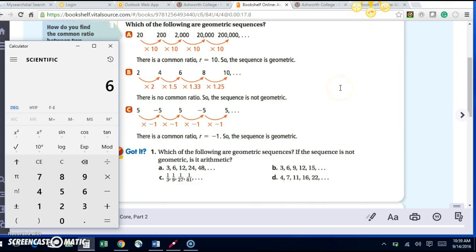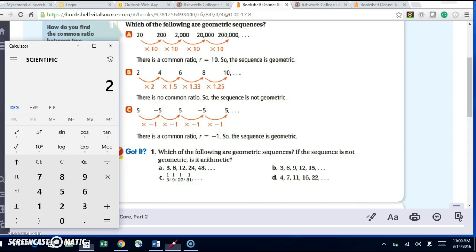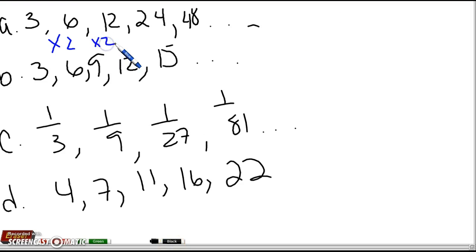First I would do 6 divided by 3, and I get 2. So here I can write times 2. Then I can do 12 divided by 6. 12 divided by 6 looks like it's 2 again.